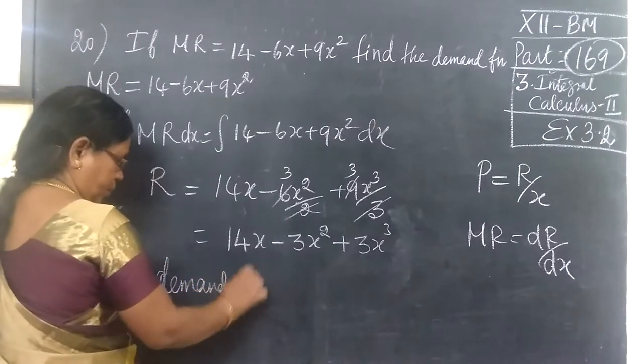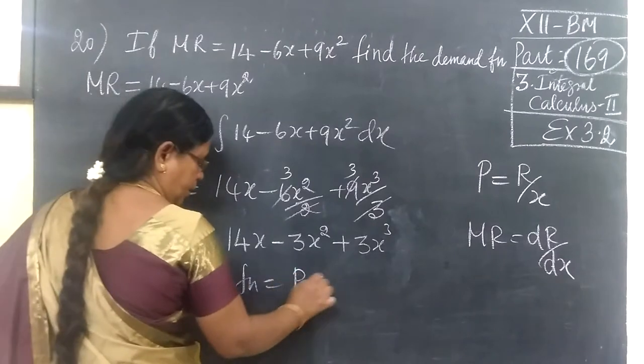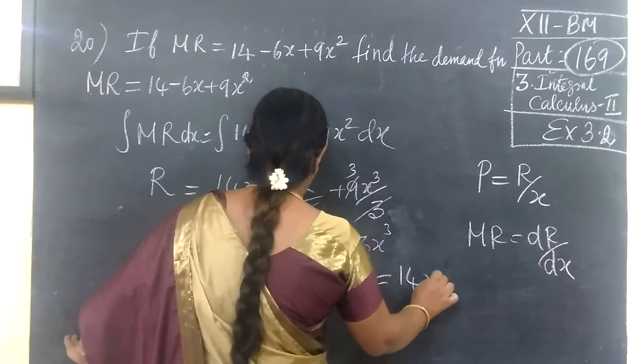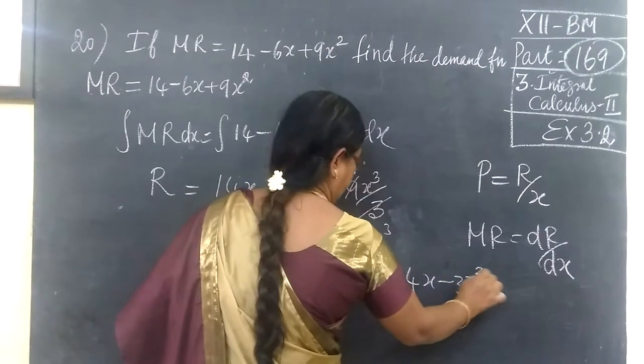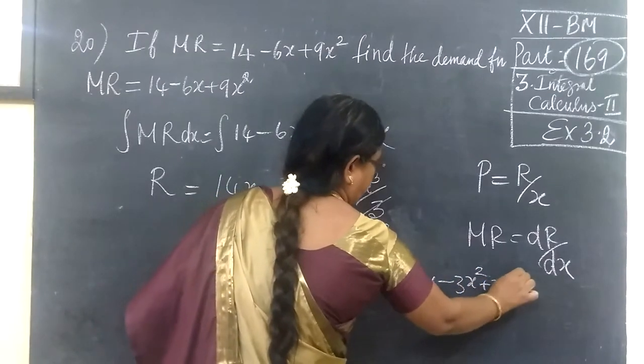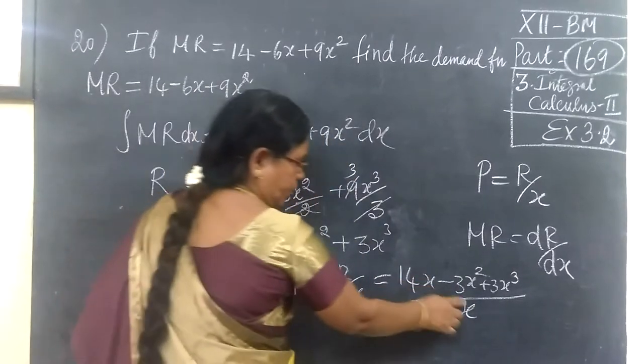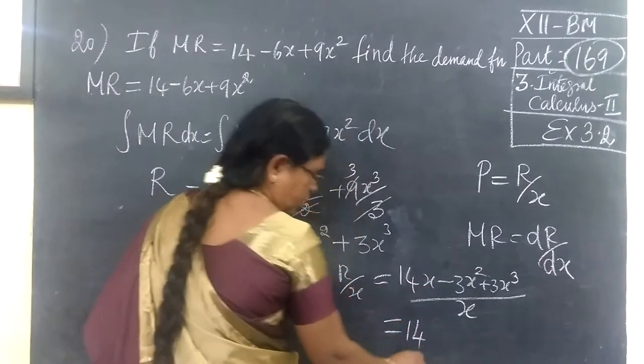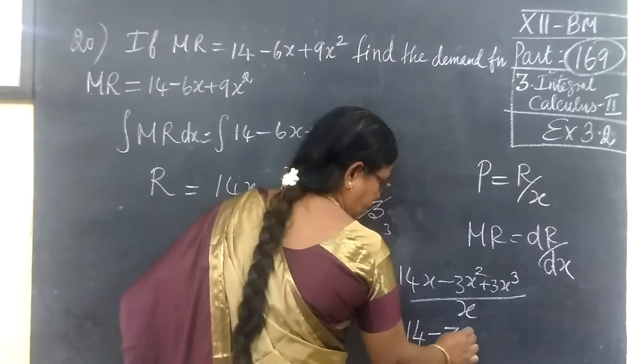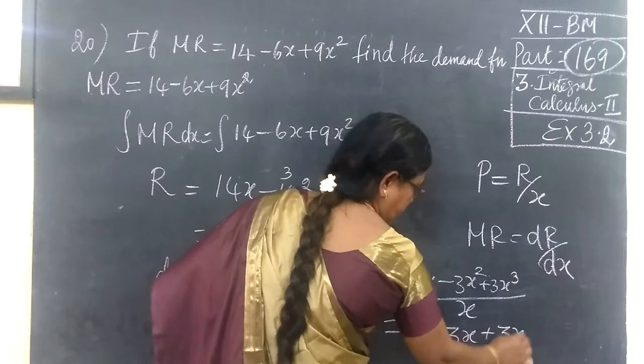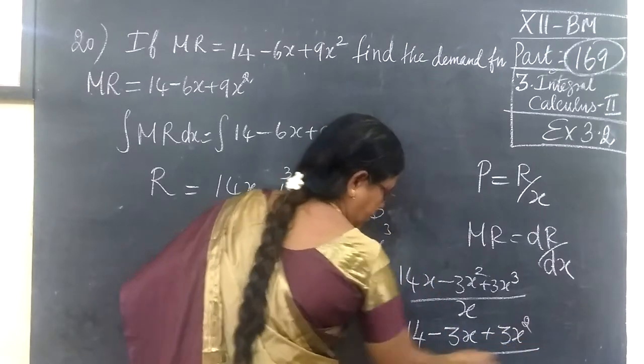Demand function P equal to R by x. R is equal to 14x minus 3x squared plus 3x cubed by x.